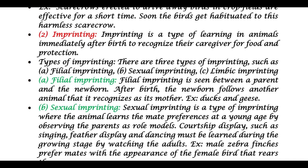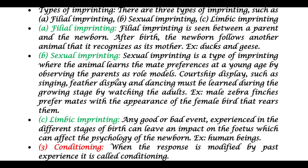The second type is sexual imprinting. Sexual imprinting is where the animal learns mate preferences at a young age by observing the parent as a role model. Courtship displays such as singing, feather display, and dancing must be learned during the growing stage by watching adults. For example, male zebra finches prefer mates with the appearance of the female bird that rears them.